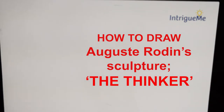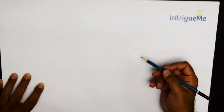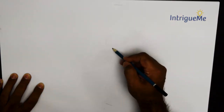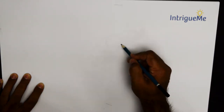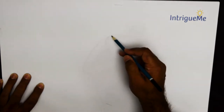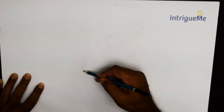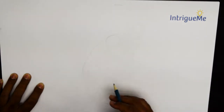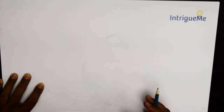Hello everybody, thank you for joining us. Today we are going to do a quick Rodin's The Thinker sketch, and in this you're basically doing some anatomy and form — it's a famous sculpture where the man is sitting in deep thought.